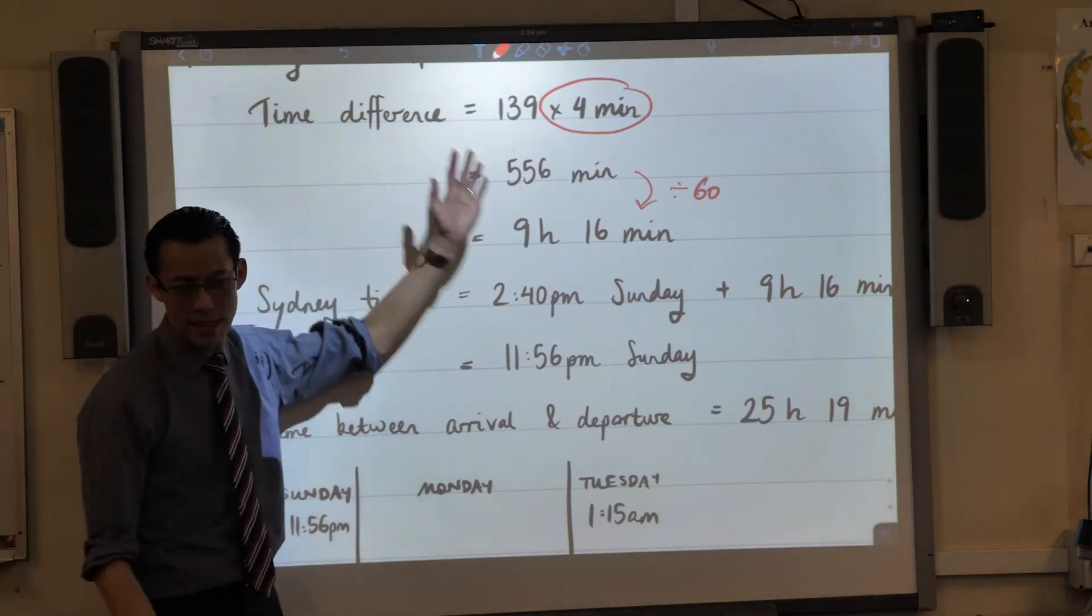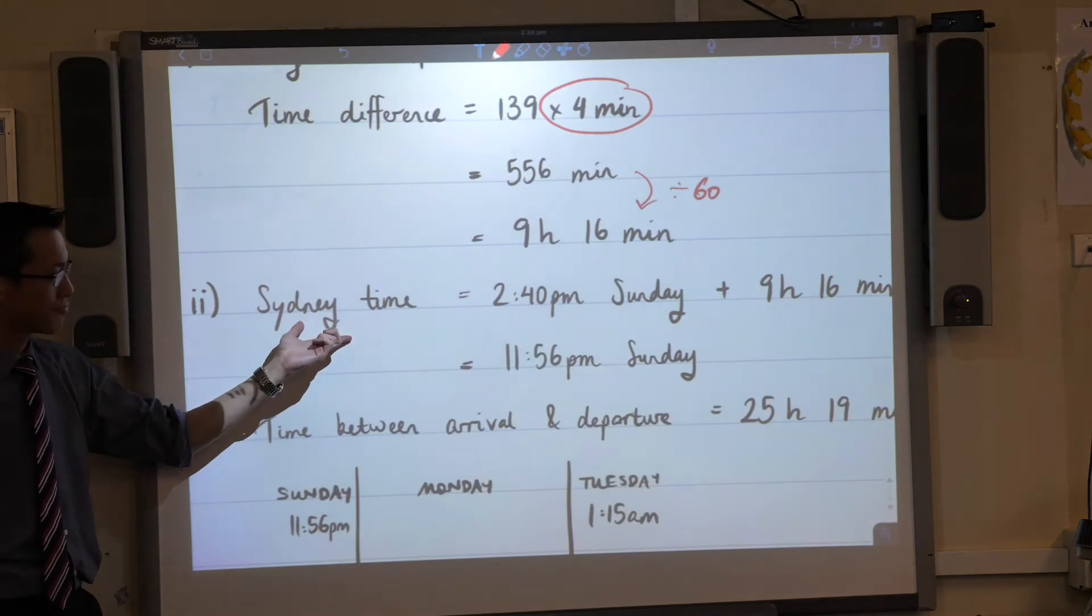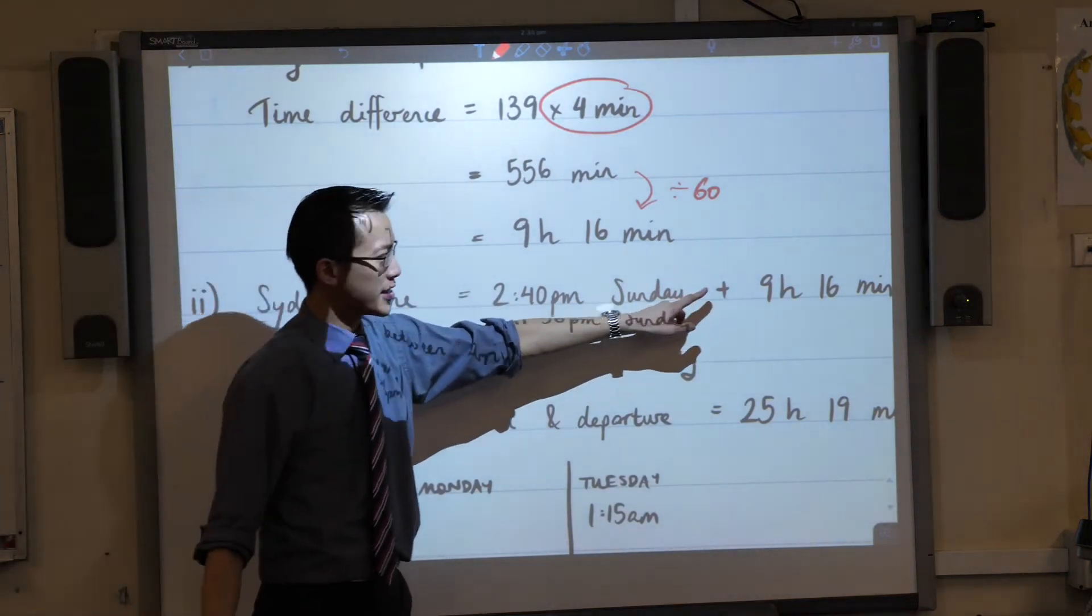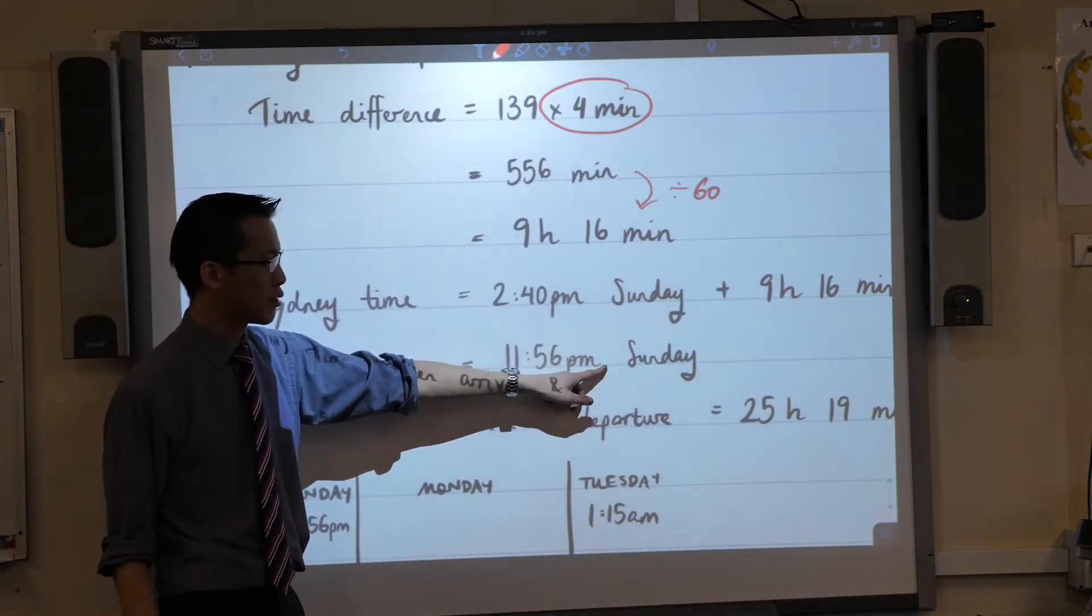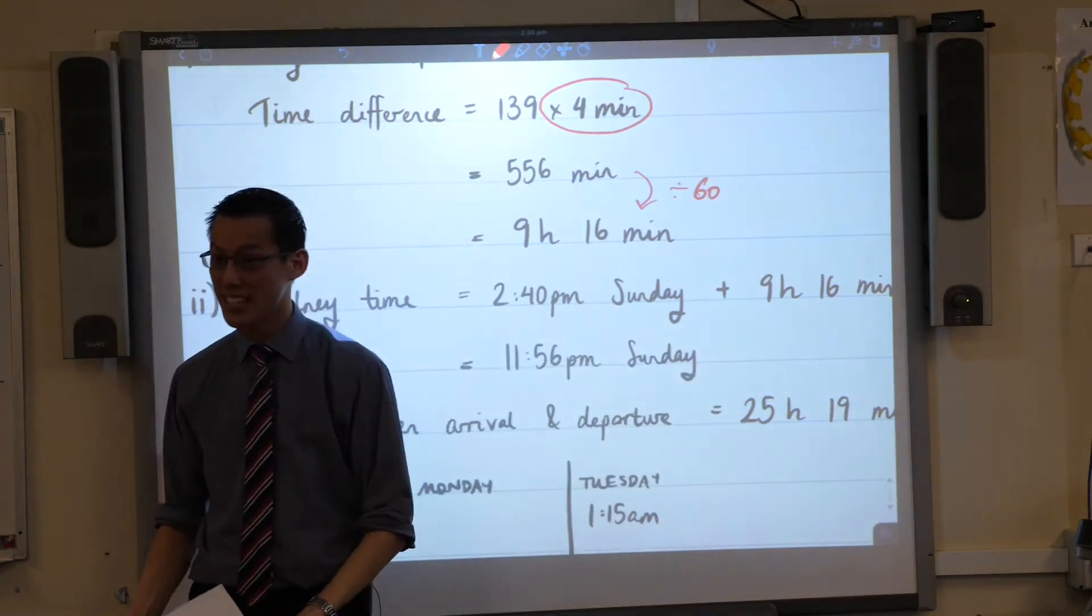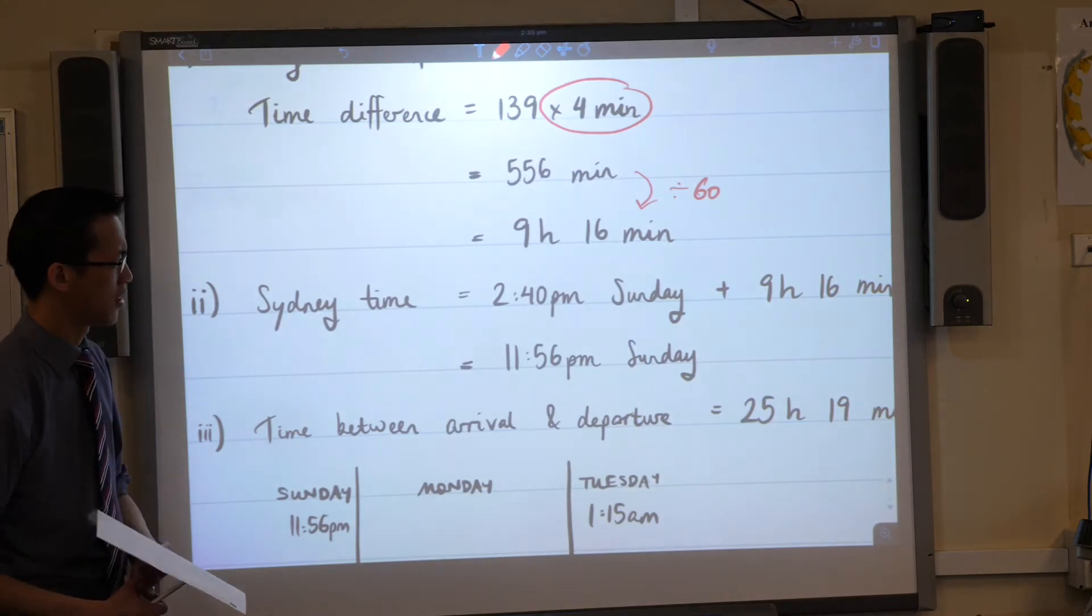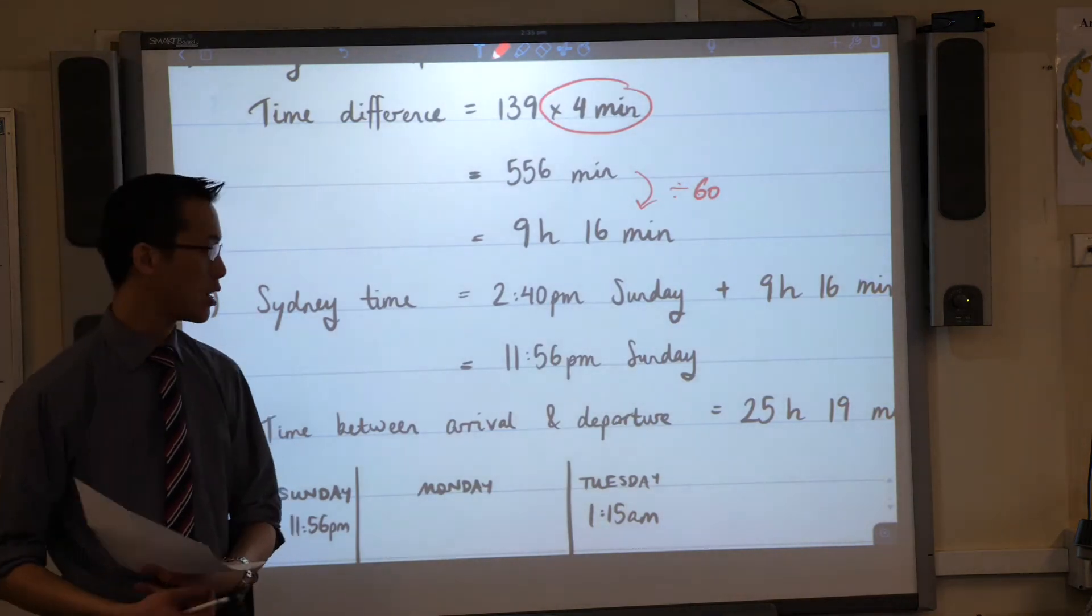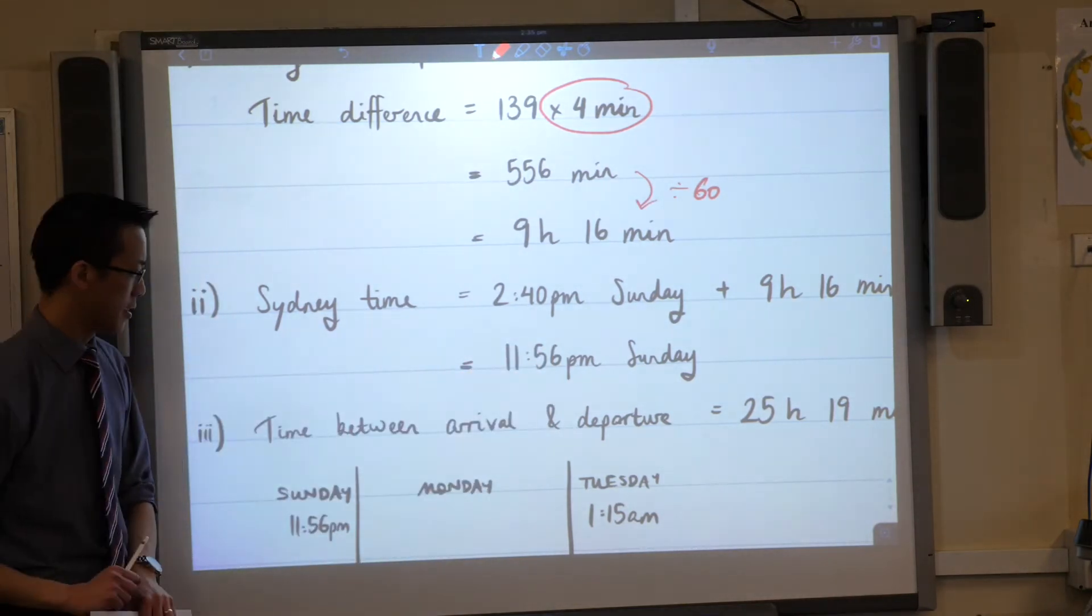You're working out Sydney time. Don't just start writing down some times and adding and subtracting things. Tell me what you're working out. I've also noted the day, even though in this case, the time difference we add doesn't actually change the day we're on. But it could just as easily have done that. If this was 26 minutes instead of 16 minutes, it'd be Monday at 12:06 AM. So I've noted the time and the day, and here comes the tricky part.